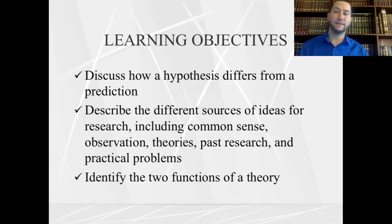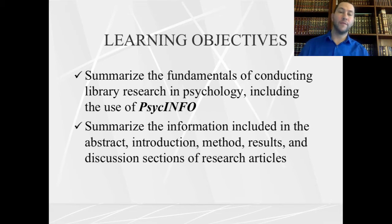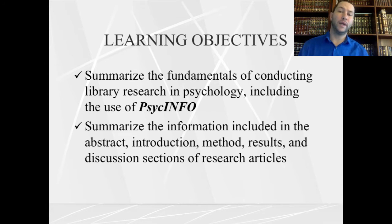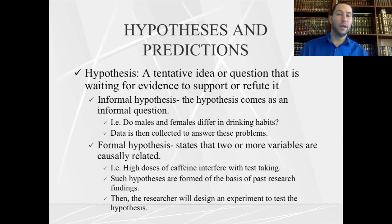So what are the learning objectives for this lecture? The first is to discuss how a hypothesis is different from a prediction, talk about sources of ideas for research, and identify functions of a theory. We also want to talk about searches — you'll have your first homework assignment, which starts with a search engine. I need to teach you where to find psychology-based research articles and show you the components or elements of an article. Some of this is basic and you may have learned it in your undergrad class, but we'll cover it anyway.